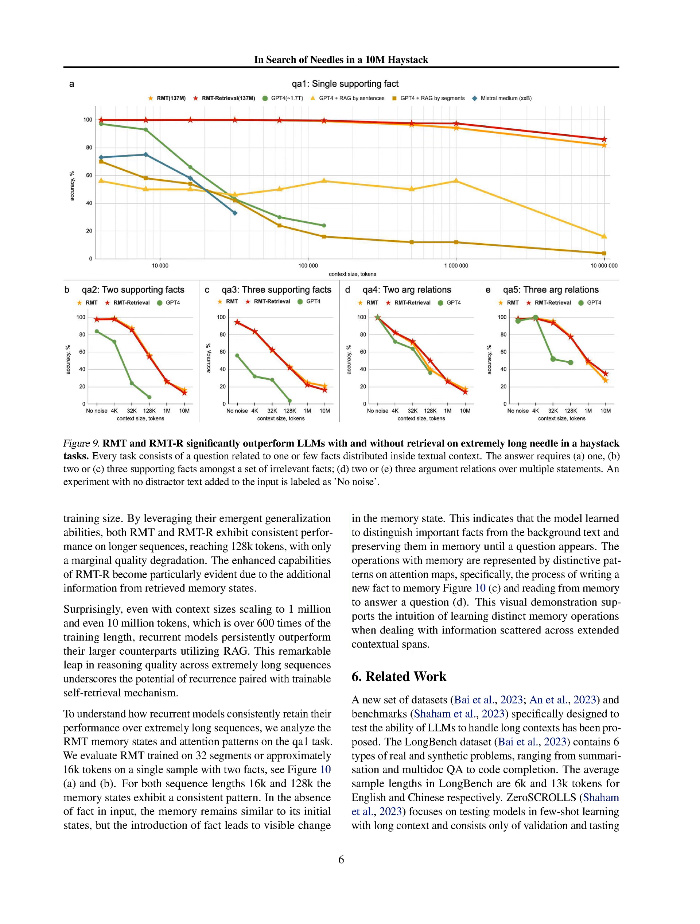In this section, we introduce a recurrent memory transformer (RMT) that addresses the bottleneck of fixed-size recurrent states in sequence processing by allowing the model to retrieve relevant past states. By incorporating self-retrieval, similar to attention in RNNs, RMT extends the context size of transformer models linearly with input size. RMT-R, an augmentation with self-retrieval, demonstrates superior performance on longer sequences, showcasing the potential of recurrence paired with trainable retrieval mechanisms for reasoning over extensive contextual spans.